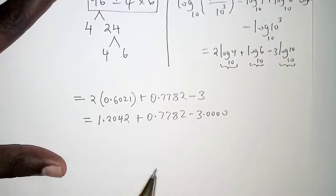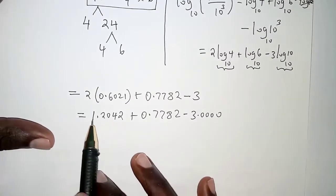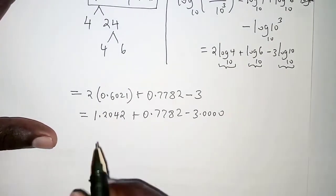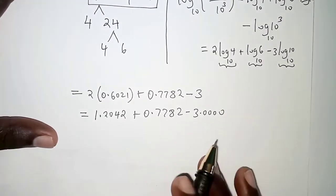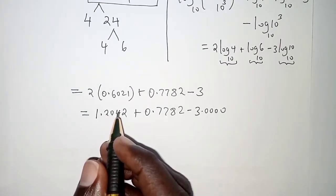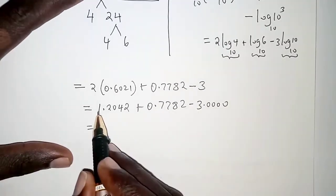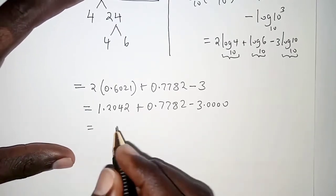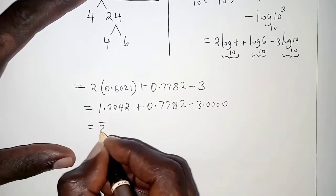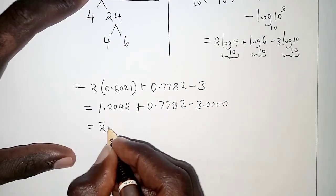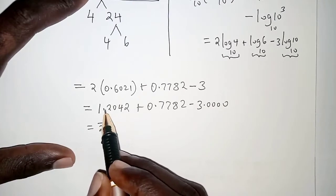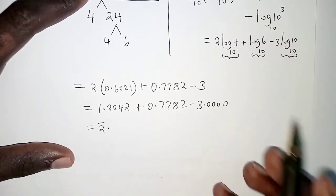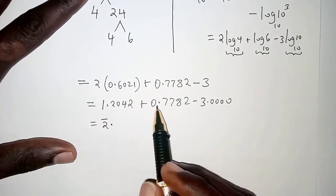At this point we will deal with the characteristics separately. Characteristics are the values before the decimal point: 1, 0, and -3. So we have 1 + 0 - 3 = -2. For logs we write this as bar 2, not -2. Then we have 0.2042 + 0.7782 - 0.0000, which gives 0.9824.